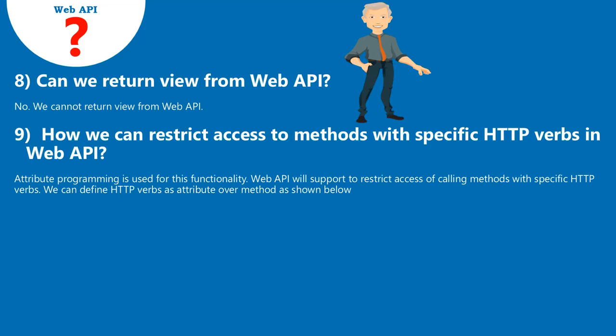Question 9: How can we restrict access to methods with specific HTTP verbs in Web API? Attribute programming is used for this functionality. Web API supports restricting access of calling methods with specific HTTP verbs. We can define HTTP verbs as an attribute over a method, as shown below.